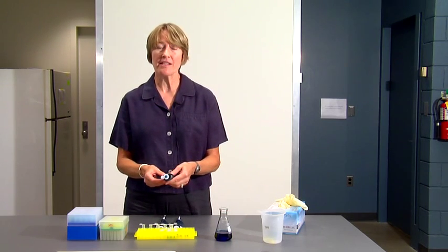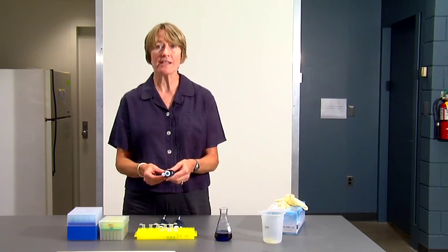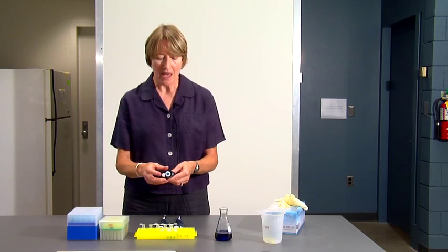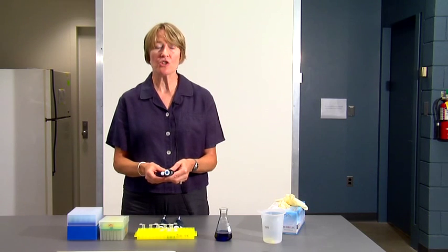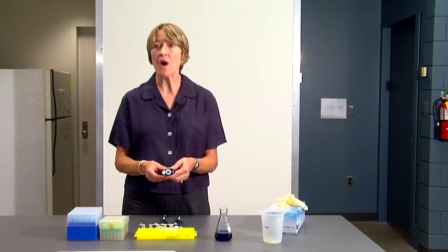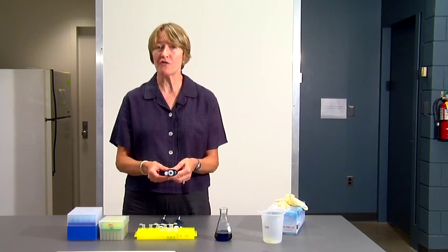The last size micropipet that we'll be using is the P1000. Notice that that says P1000 on the plunger, and it measures 200 to 1,000 microliters of fluid accurately.